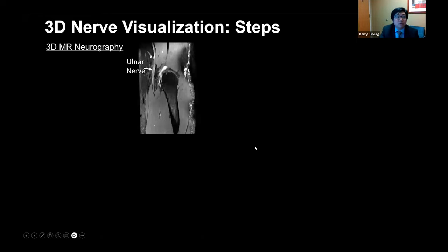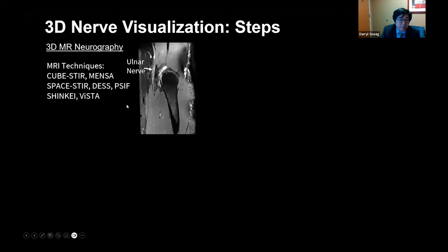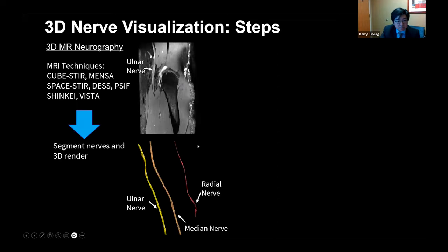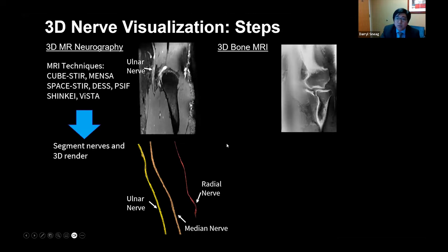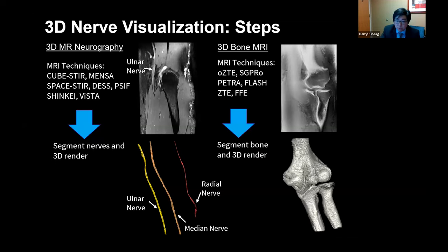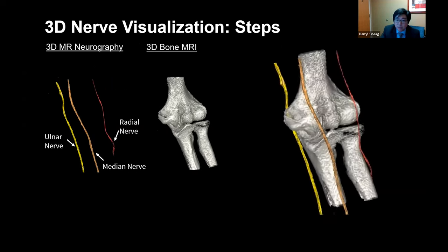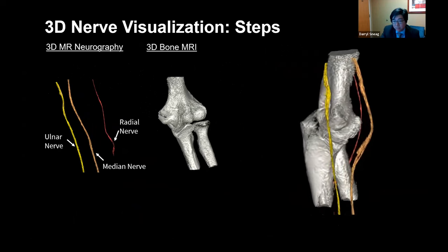For three-dimensional neurography, an example reformatted elbow sequence from 3D MRN shows the ulnar nerve. Common MRI sequences such as CUBE, SPACE, and VIBE can be used to obtain MR neurography. We first segment these nerves using vendor-provided software tools and 3D render them. Next, we acquire a 3D bone MRI image — techniques include ZTE and Osteo — segment and render the 3D bone, then combine them to provide 3D rendering that can be rotated to visualize the nerve against bony landmarks.